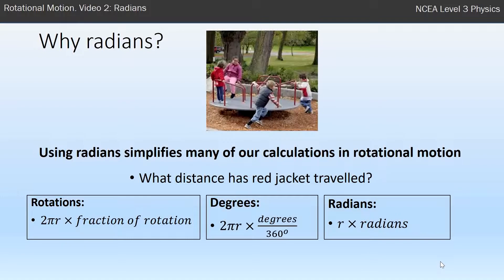So once again, if we were to work out the distance that the red jacket girl had travelled, using rotations we'd have a formula that looked like 2πr times the fraction of the rotation. Using degrees, it would be 2πr times how many degrees divided by 360. But our simplified formula for radians, it's just r times that radians. So it becomes much more simple.